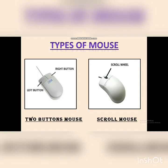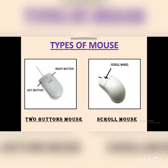Third, two-button mouse. This mouse was the oldest one — used long back, and nowadays it is not used. It had two buttons: the right button and the left button. With the invention of the mouse, there came a new feature — the scroll mouse. This is the fourth type of mouse, and in this fourth type a new feature called the scroll wheel was added, along with the two buttons, left and right.